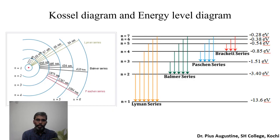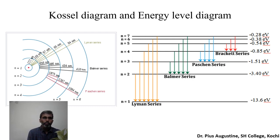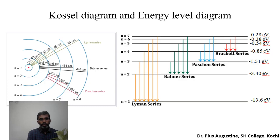Please pause and calculate the energy of electron orbits or levels in hydrogen atom in electron volts using the expression E = −mZ²e⁴ / (8ε₀²n²h²). For n = 1 you should get −13.6 eV; for n = 2, −3.4 eV; n = 3, −1.51 eV; n = 4, −0.85 eV; n = 5, −0.54 eV; n = 6, −0.38 eV; and n = 7, −0.28 eV. Because the energy is negative, a smaller numerical magnitude corresponds to a higher (less negative) energy value.